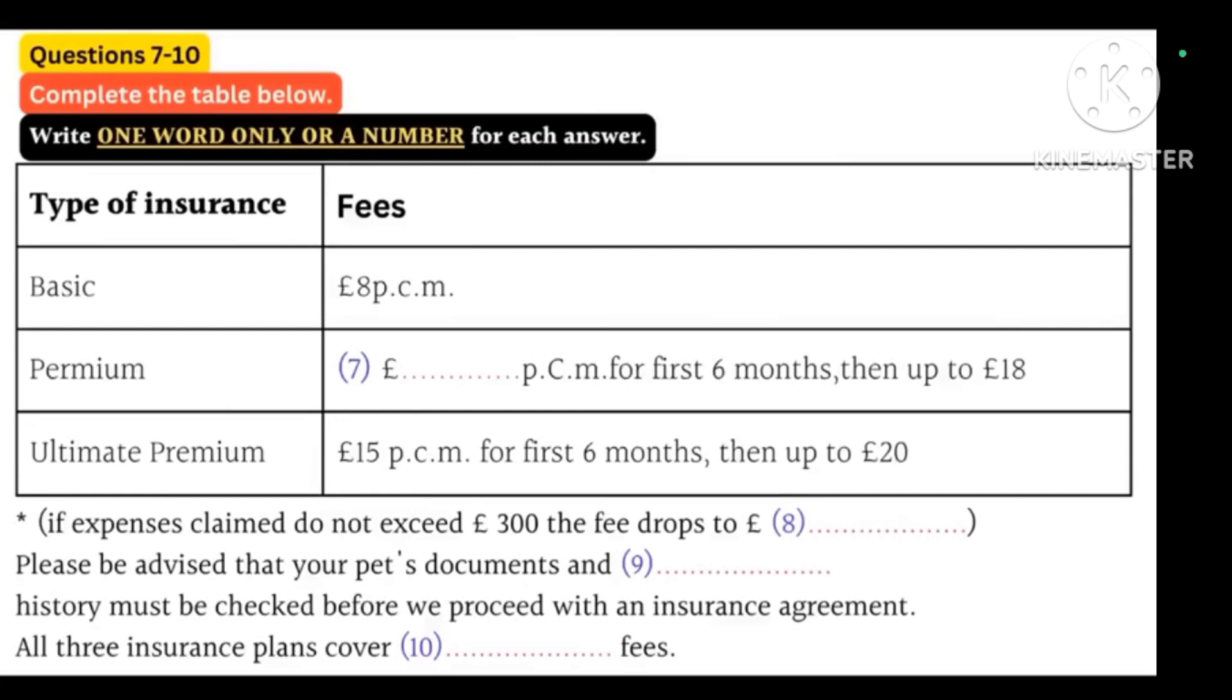With the basic plan, you will have to pay the same fee of £8 per month regardless of how long you stay with us. If you choose one of our other two plans though, you will receive a discount for the first six months. You'll only have to pay £12 for premium and £15 for ultimate. And then, depending on your circumstances, you might be eligible for further discounts after your first year, depending on how many expenses you claim. If you claim less than £300, you'll have to pay the same as for the basic plan but receive the cover provided by the premium plan.